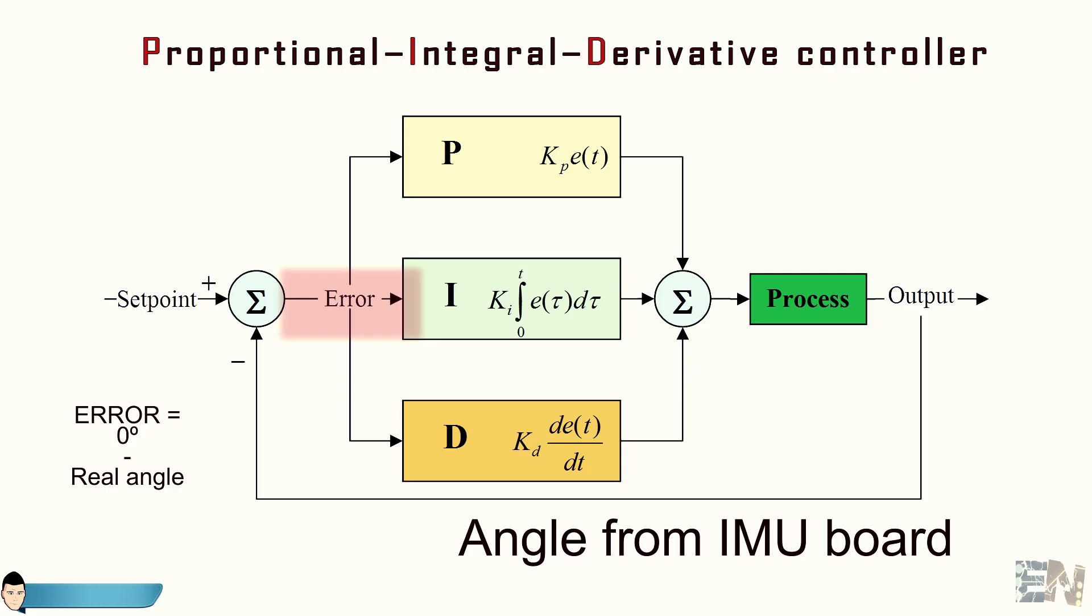The next step in the PID control is to use these three constants. These constants are Kp, Ki and Kd as for proportional constant, integral constant and derivative constant.